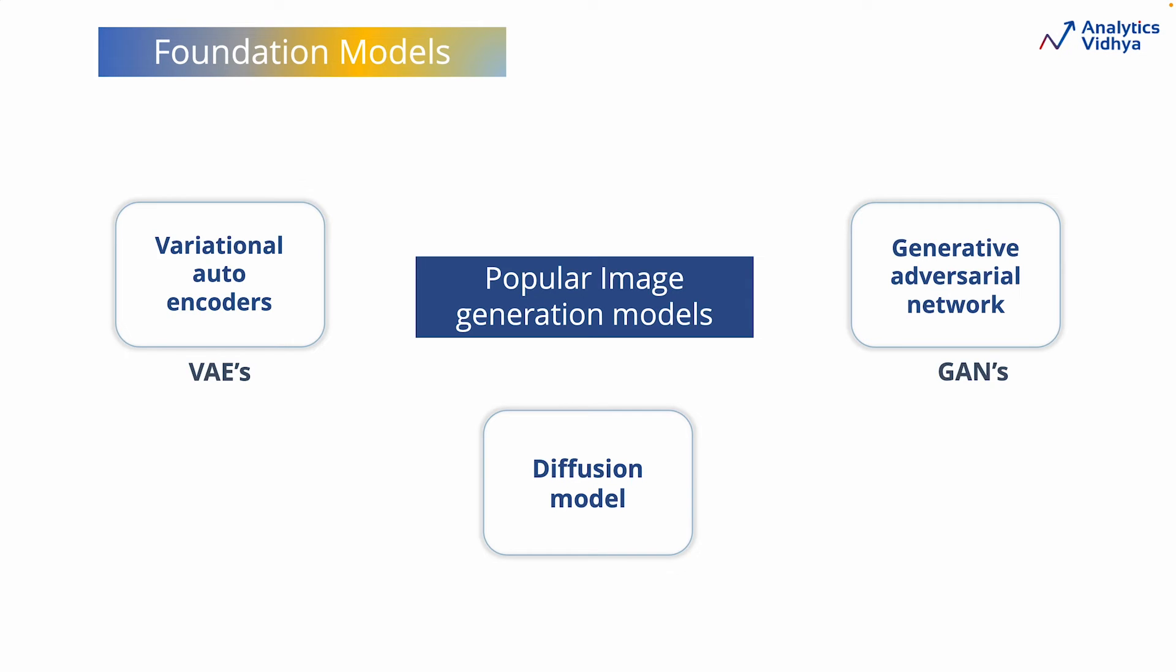A few popular foundation models which are used to create images are variational autoencoders or VAEs, generative adversarial networks or GANs, and diffusion models. At present, most of the image generative tools are based on a combination of one or more of these foundation models. However, today most of the cutting edge generative AI tools are heavily relying on diffusion models.